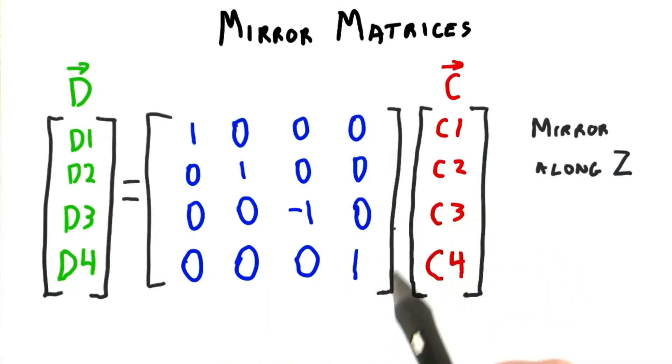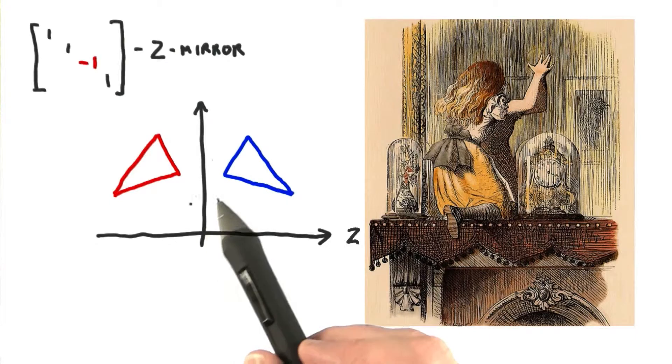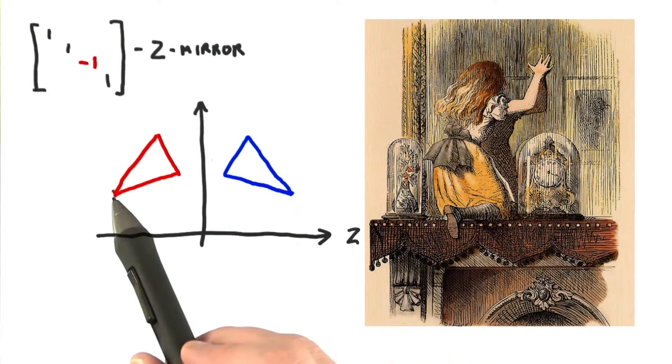For example, here's a mirror matrix that mirrors the z coordinate. This transform makes the z-axis act something like a mirror. Anything on one side of the axis is mirrored to the other.